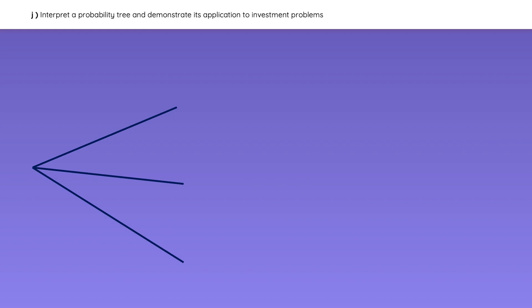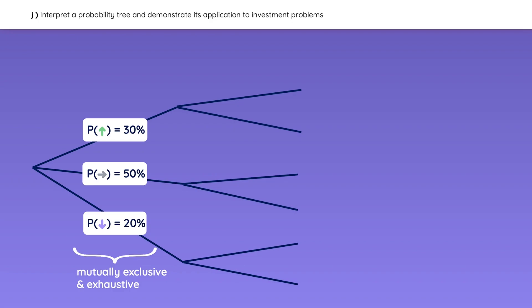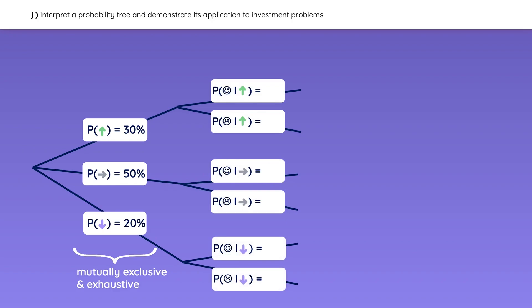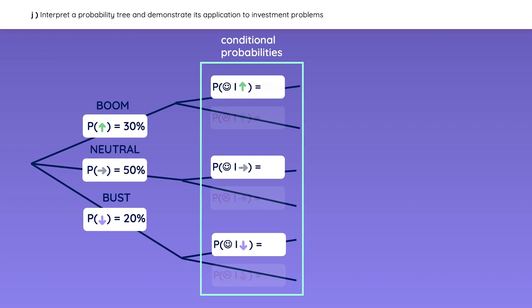Let's look at the economy as an example. Assume that the probability of an economic boom is 30%, a neutral economy is 50%, and an economic downturn is 20%. Notice that the events are mutually exclusive and exhaustive. In each of these three scenarios, people could either be happy or upset. Let's only focus on the happy branches for now — these are your conditional probabilities. The probability of a happy population given an economic boom is 90%, given a neutral economy is 50%, and given a downturn is 10%.